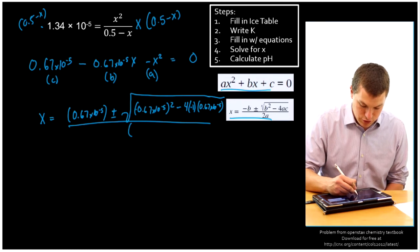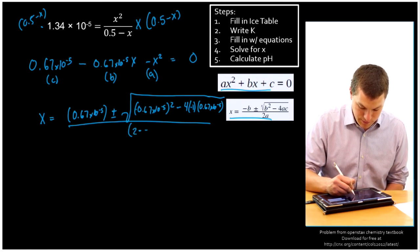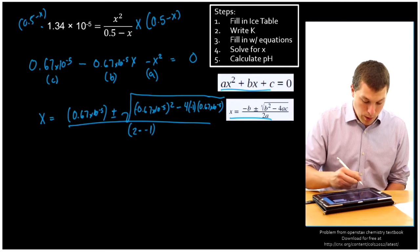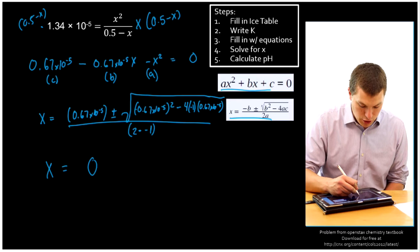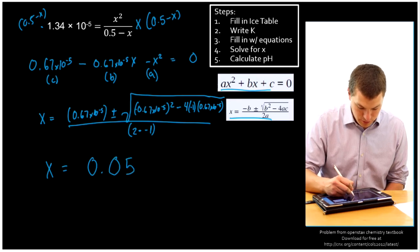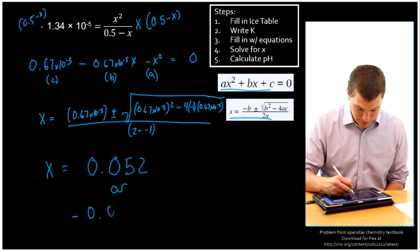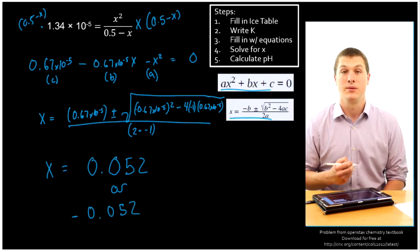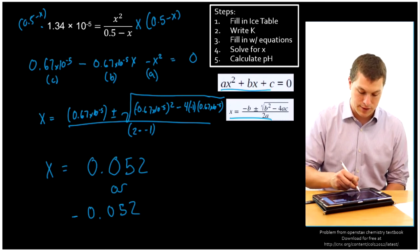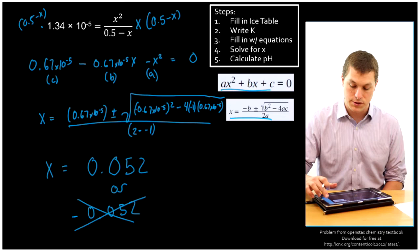All over 2A, which is going to be 2 times our negative 1, which is the value for A. When we plug that in, we're going to get two values for X. We're going to get 0.052, or negative 0.052. But we're going to take the positive value, because this is going to represent concentration, and we can't possibly have a negative concentration. So our X is equal to 0.052, and now we're almost done.